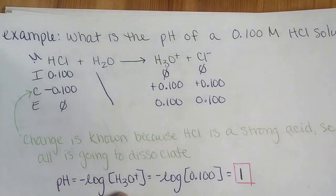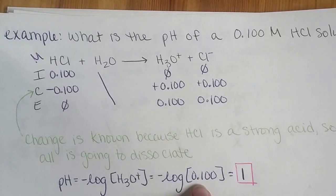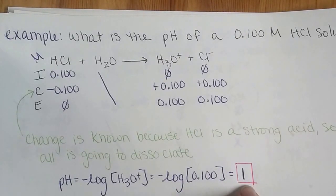We take the negative log of our concentration of H3O+, or the 0.100, which gives us a pH of 1.